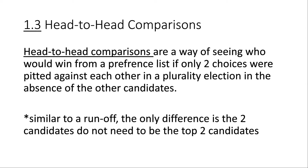In this video we're going to be talking about head-to-head comparisons. Head-to-head comparisons are a way of seeing who would win from a preference list if only two choices were put against each other in a plurality election in the absence of the other candidates. This is very similar to what we did with runoffs in the last video. The only difference is the two candidates in the head-to-head comparison don't need to be the top two candidates — it can be any two candidates out of everybody on the list.